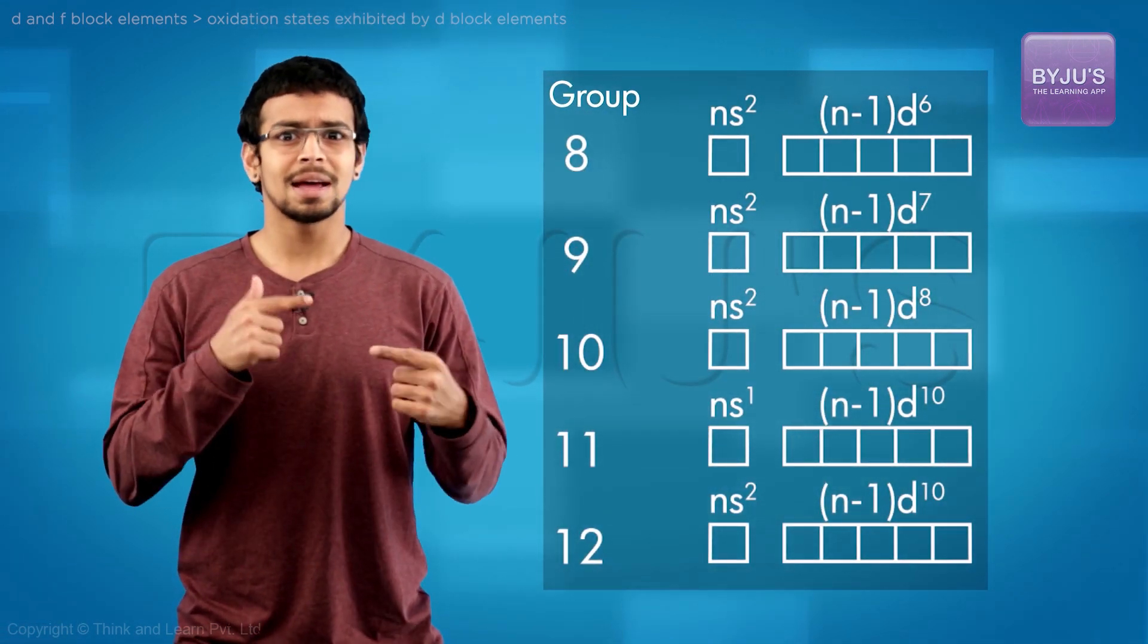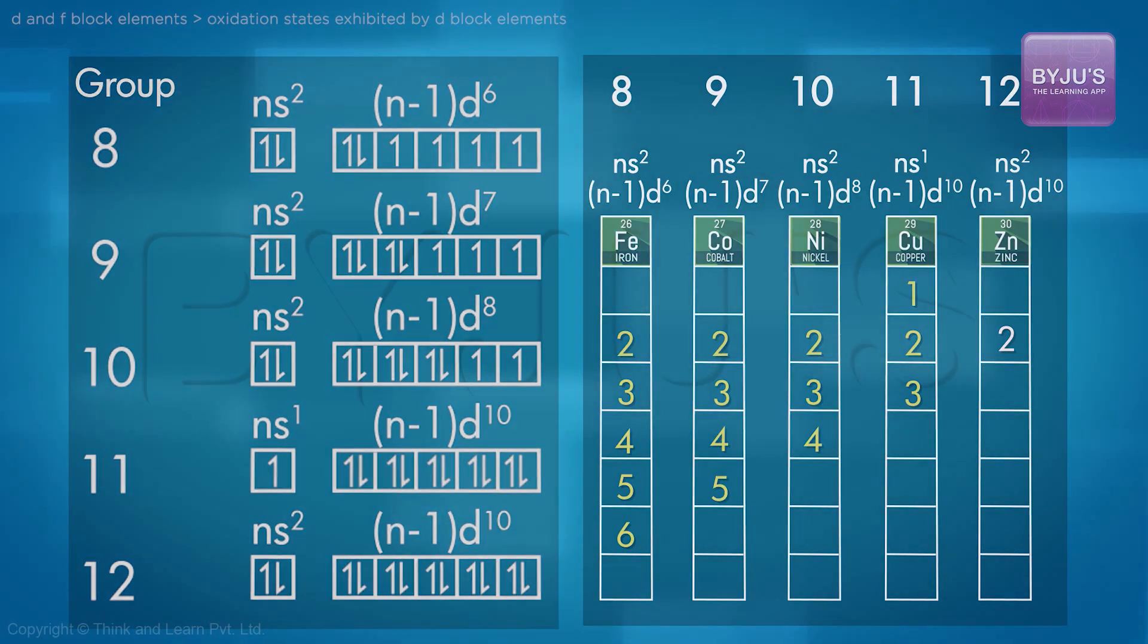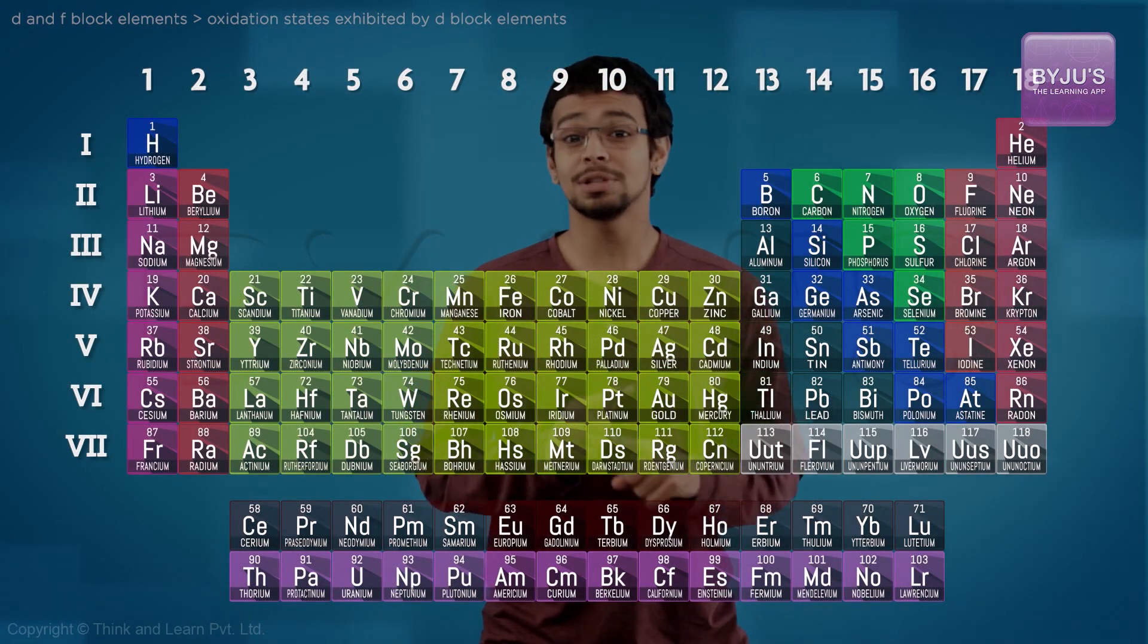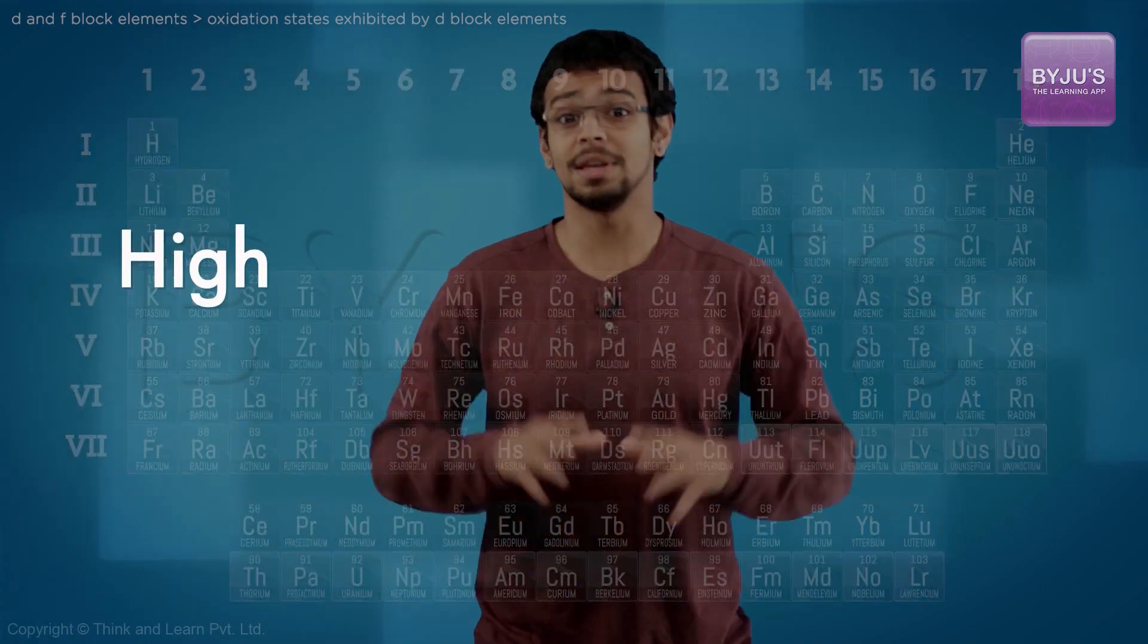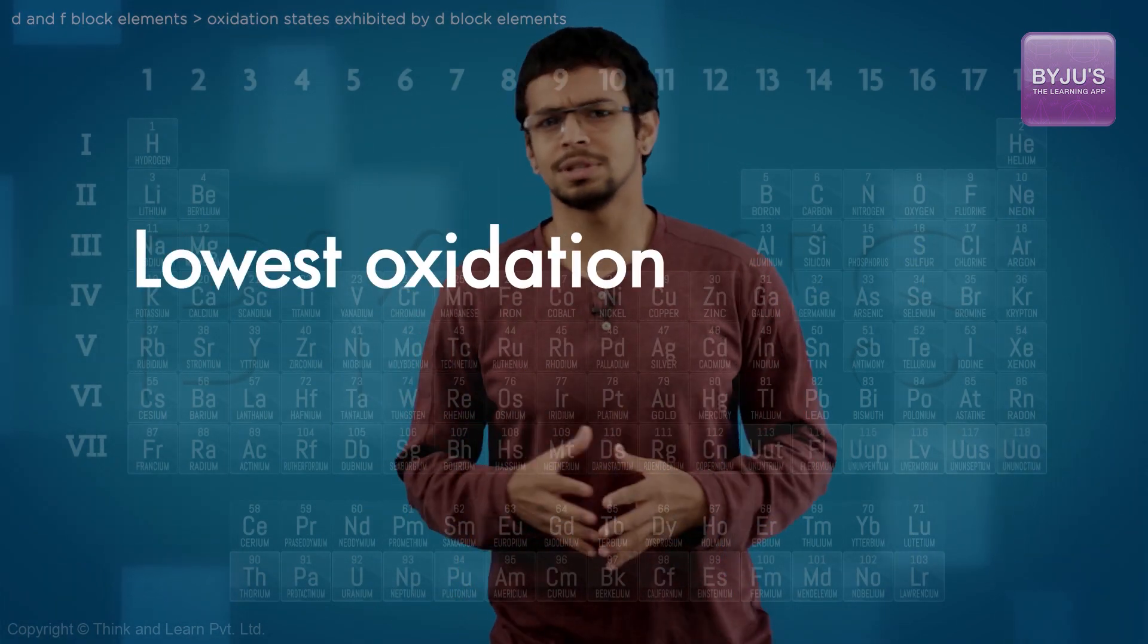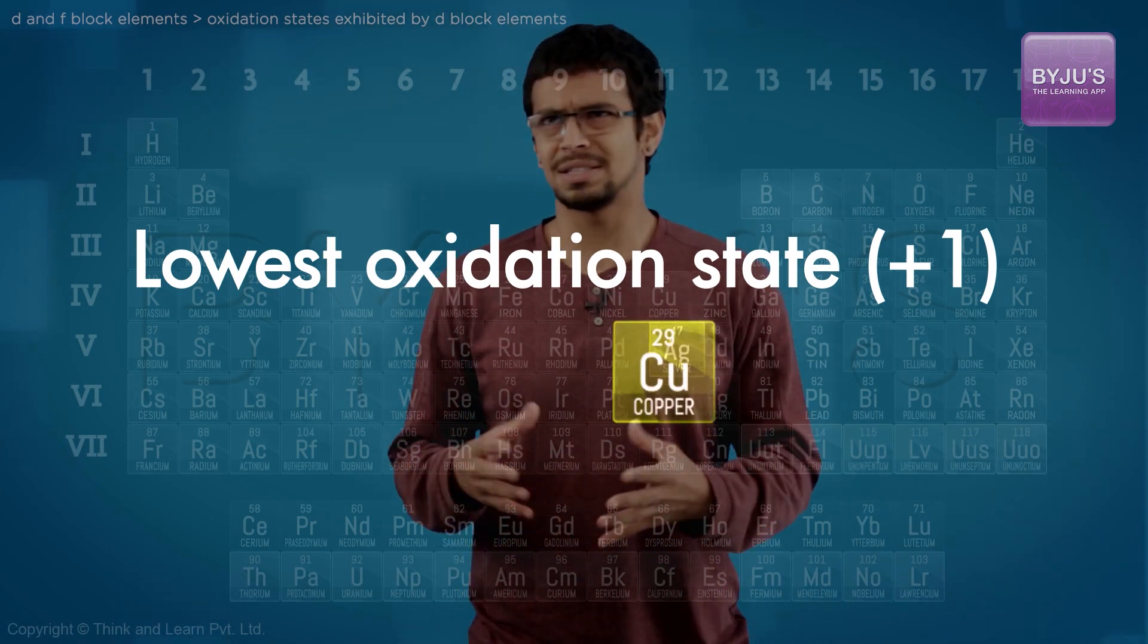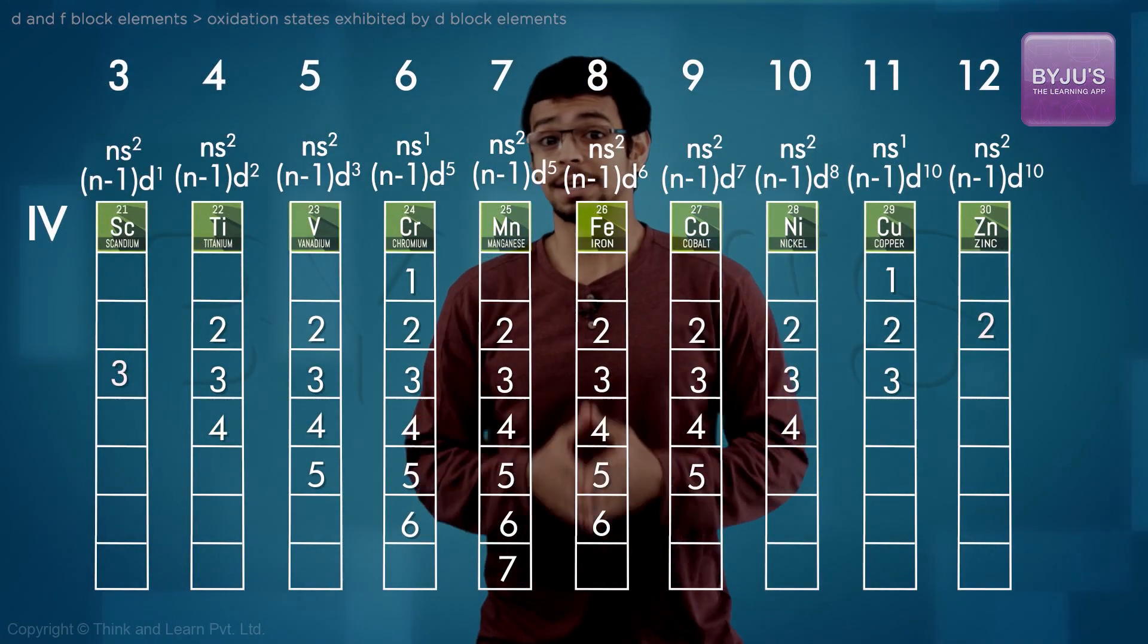Group 7 onwards, the maximum oxidation number is not very related to the electronic configuration. The highest oxidation number of plus 8 is exhibited by osmium and the lowest oxidation number of plus 1 is exhibited by quite a few elements: copper, silver, rhenium, gold, mercury, and many more.